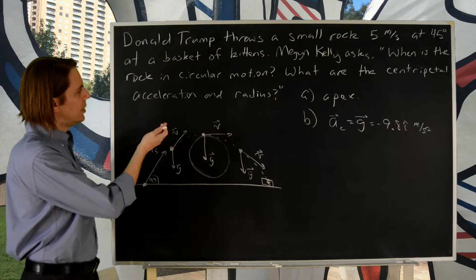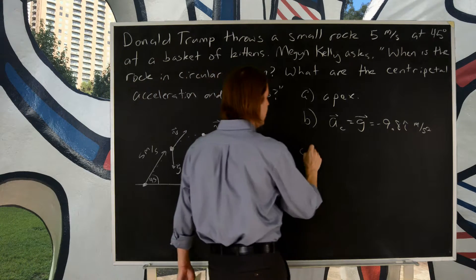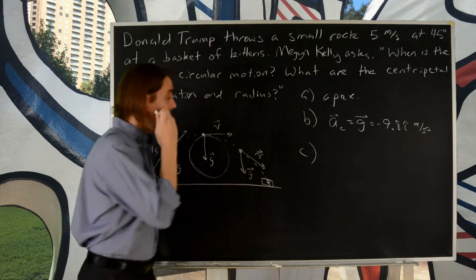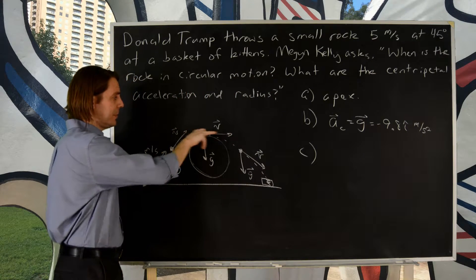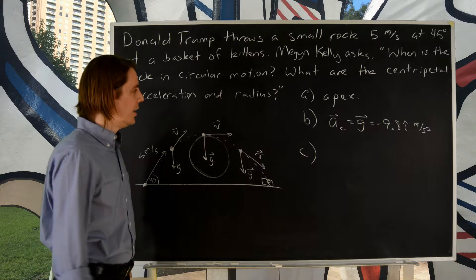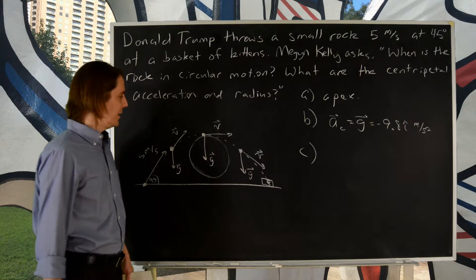And then finally, what's the radius? Part C. Well, we have the magnitude of the centripetal acceleration and we have the speed, the magnitude of the velocity, so we can get that.